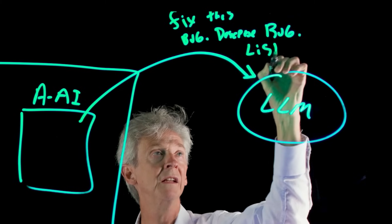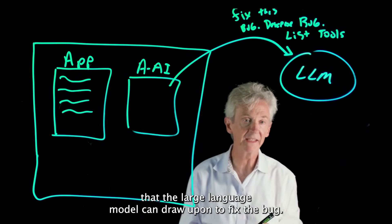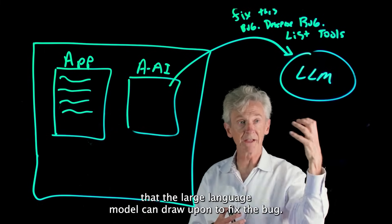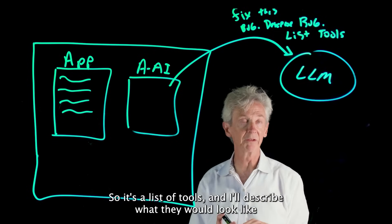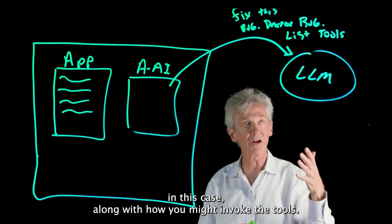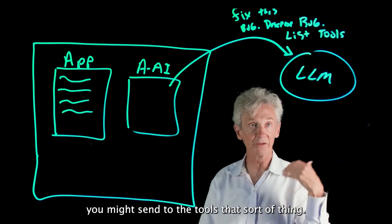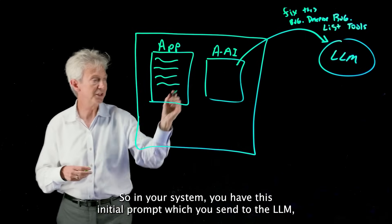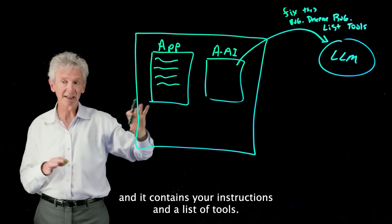In the prompt you'll describe the bug and you will give it a list of tools that the large language model can draw upon to fix the bug. So it's a list of tools and I'll describe what they would look like in this case, along with how you might invoke the tools, like what arguments you might send to the tools.